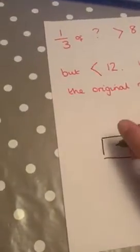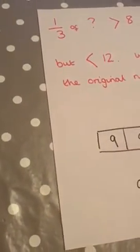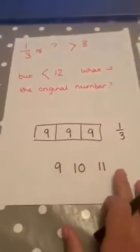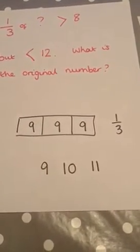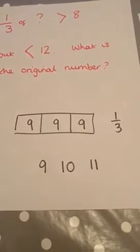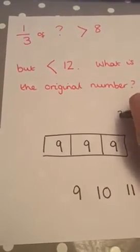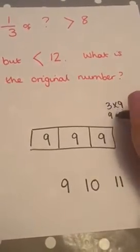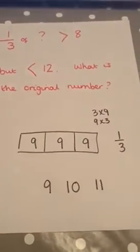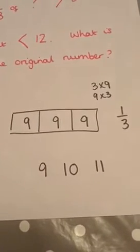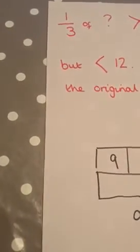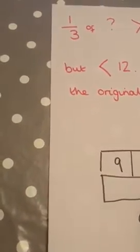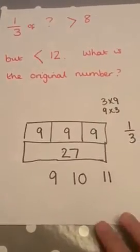So if I put 9 into my bar model, what could my original number be? Pause the video and have a go at working that out. Don't forget we're counting in our three times table. So instead of doing 3 times 9, you could do 9 times 3. So count up your three times table on your fingers until you get to 9. Excellent. What did you get for 3 times 9? It should be 27.